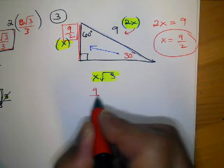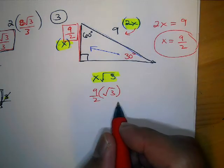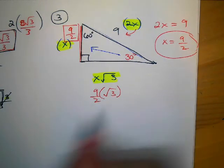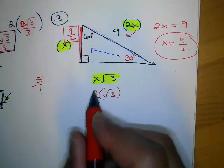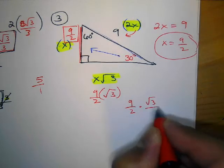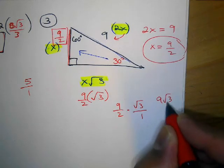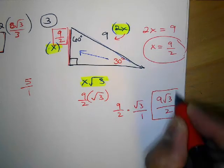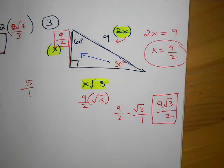The last side is x√3, so that's 9 over 2 times √3. Think of √3 as a fraction — √3 over 1 — so multiplying gives you 9√3 over 2. That's how you write it. And that's number 3 done.